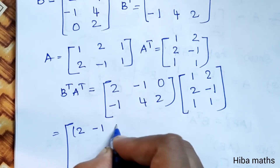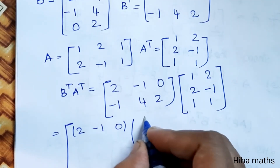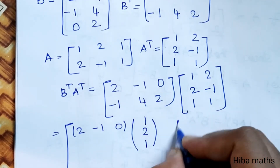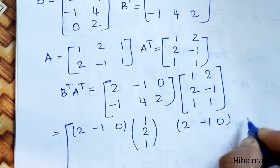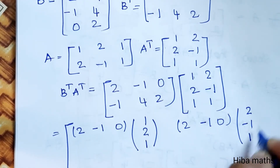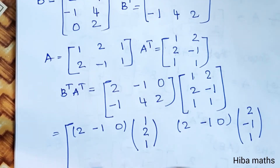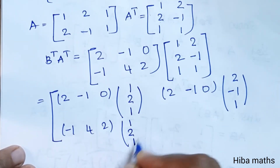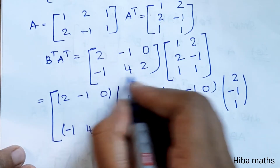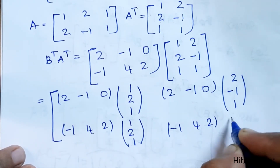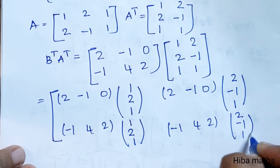2 minus 1 is 0 for 1st column entries 1, 2, 1. Now we multiply: 2 minus 1 is 0, 2 minus 1 is 1. Second row is [-1, 4, 2], first column [1, 2, 1]. At the second row: -1, 4, 2 with 2nd column [2, -1, 1].